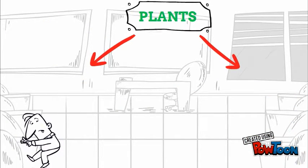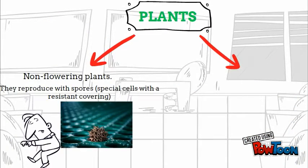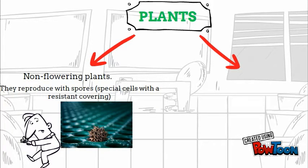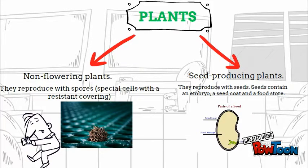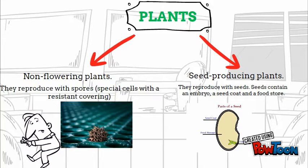Plants can be non-flowering plants. They reproduce with spores, special cells with a resistant covering, or seed-producing plants. They reproduce with seeds. Seeds contain an embryo, a seed coat, and a food store.